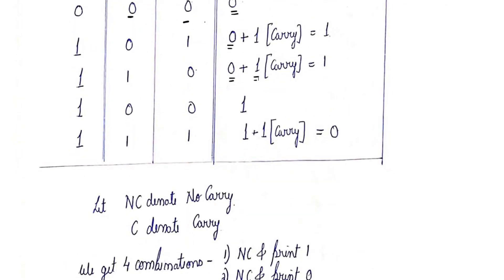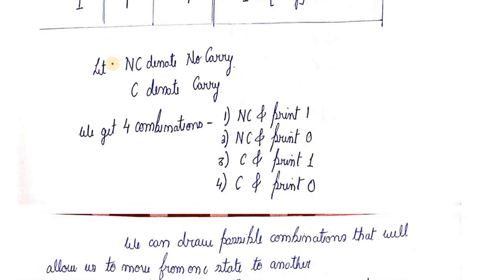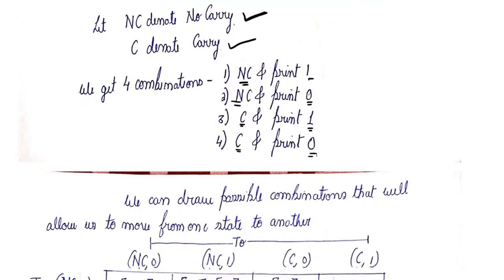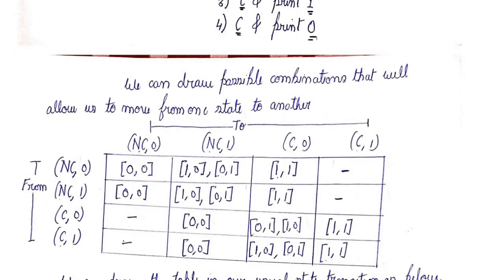The entire process can be considered in two parts: NC (no carry) and C (carry), which is either 0 or 1. In the first column we get four combinations: no carry and print 1, no carry and print 0, carry and print 1, and carry and print 0. Now let's look at the state transition table. Starting from no carry and printing 0, the carry value for the next step is 0.